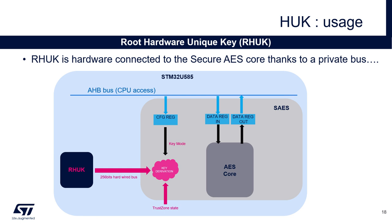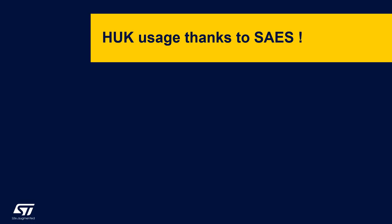It will do some key derivation from the root hardware unique key with two additional inputs: the TrustZone state and the key mode used by the Secure IOS. Based on one root hardware unique key, the Secure IOS is able to derive up to six keys. Those ones are named DHU key — derived hardware unique key.